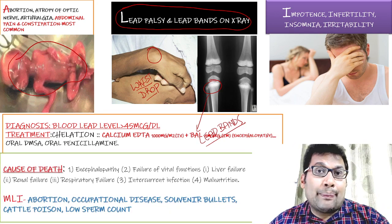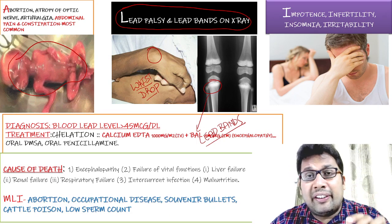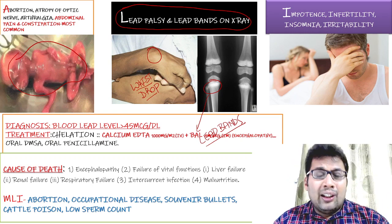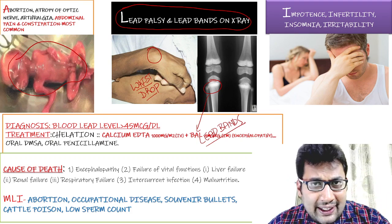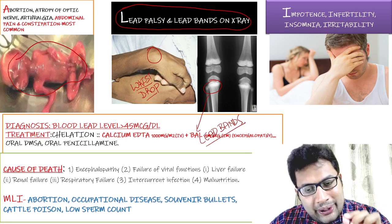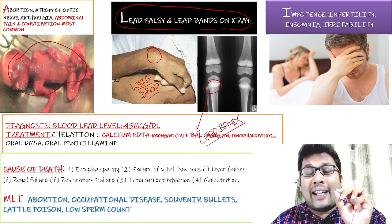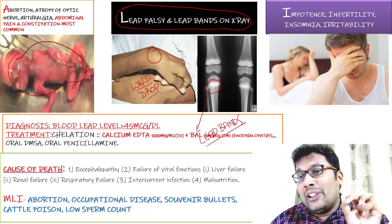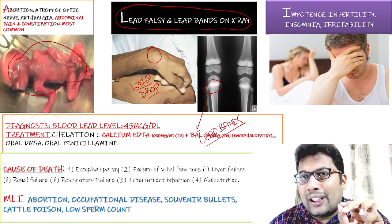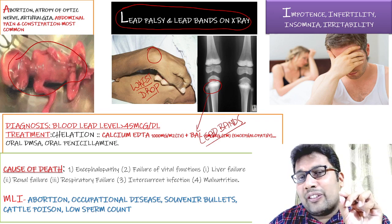Medico-legal importance and cause of death: the cause of death in lead poisoning is encephalopathy, liver failure, renal failure, intercurrent infection, or malnutrition. Medico-legally, lead is used in criminal abortion, and can be an occupational disease. Poisoning can be seen from souvenir bullets, it can be a cattle poison, and it leads to impotency due to low sperm count.